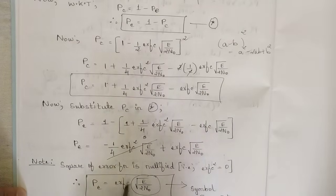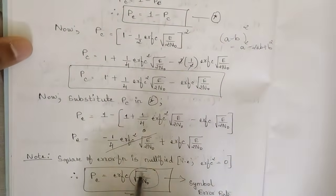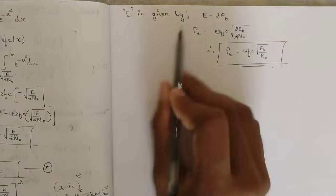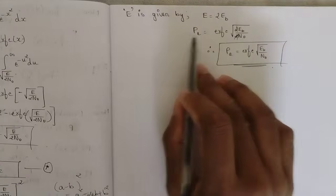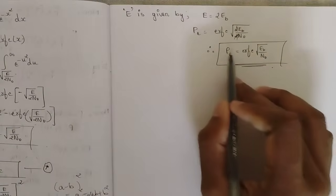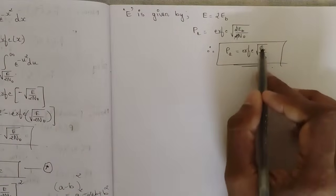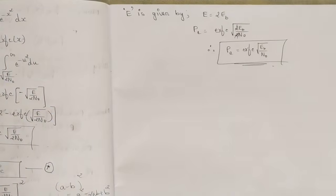This is also called the symbol error rate. Since E = 2Eb (because we have N = 2 bits, giving two different energy combinations), substituting: PE = erfc(√(2Eb/2N0)) = erfc(√(Eb/N0)). So the final error probability of the QPSK signal is PE = erfc(√(Eb/N0)).